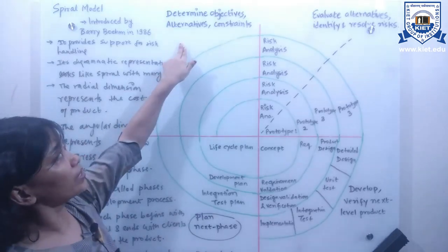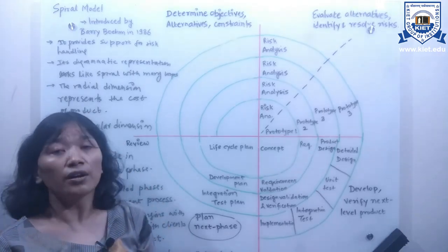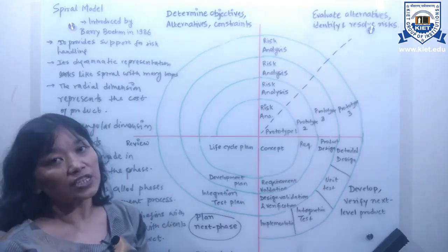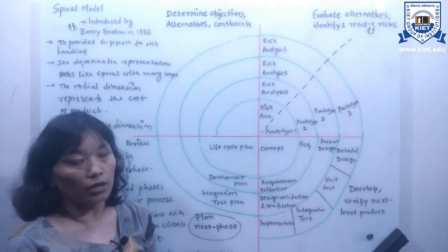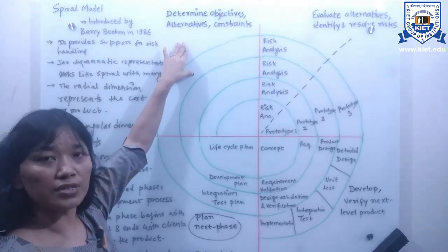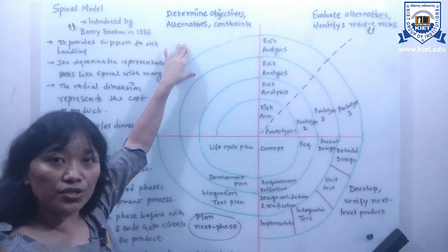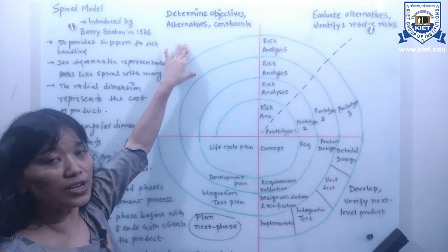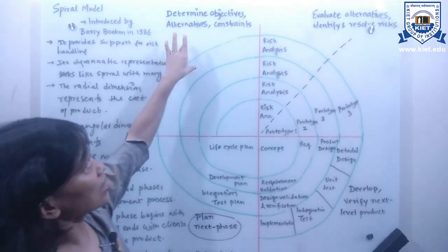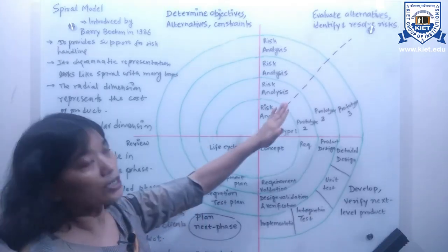In the first quadrant — determining objectives, alternatives, and constraints — requirements are gathered and objectives are identified and analyzed for the best possible method. All alternative possible solutions are also proposed for finding the best possible solution, along with constraints related to cost, time, schedule, risks, and so on. Once the software system objectives, alternatives, and constraints are understood, the second quadrant activities are performed.